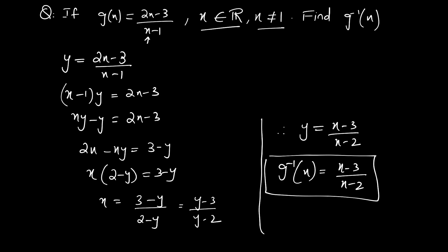So this is your g inverse function. For what values of x is it defined? It is defined for all real values except x = 2. x cannot be equal to 2 because when you insert 2, this function will be discontinuous.